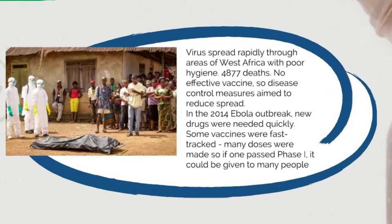Disease control measures were generally aimed at reducing spread: quarantine for people who tested positive for Ebola; sterilization of equipment; protective clothing and PPE such as masks, gloves, and scrubs for doctors treating patients; rapid identification and testing of individuals who came into contact with the disease — similar to track and trace; and reducing person-to-person contact, similar to lockdowns.